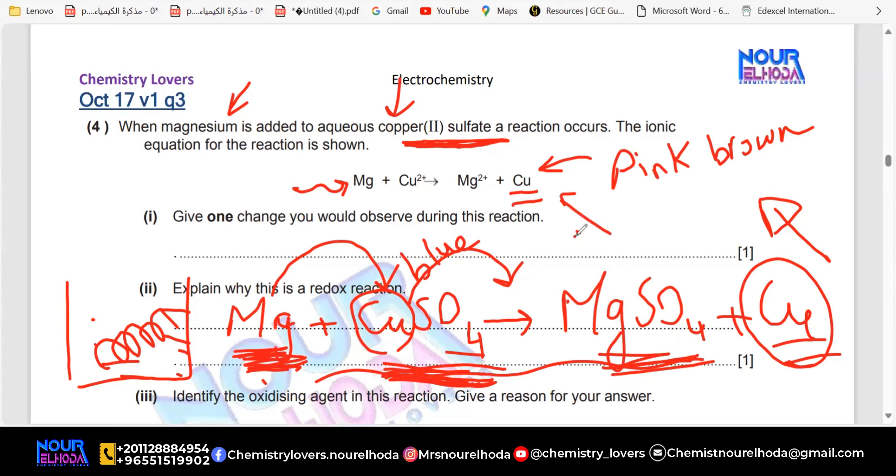So the three observations are: number one — solid decreases in size; number two — pink-brown substance is formed; number three — the solution becomes paler. The blue color fades and pink solid forms — that's already in the chat.